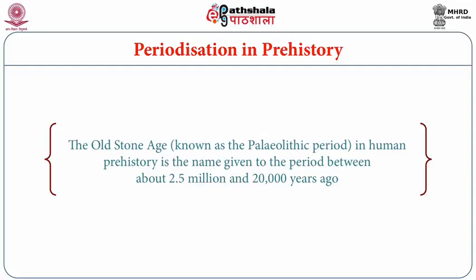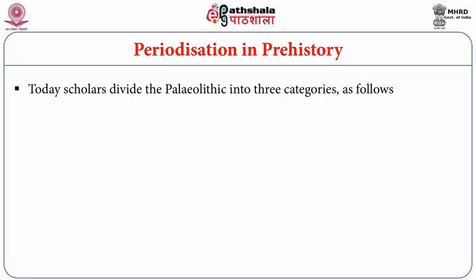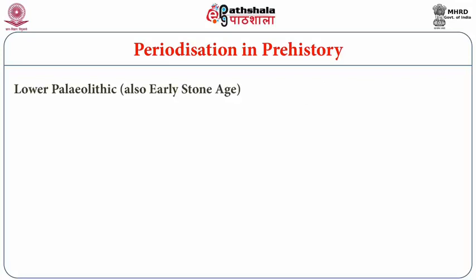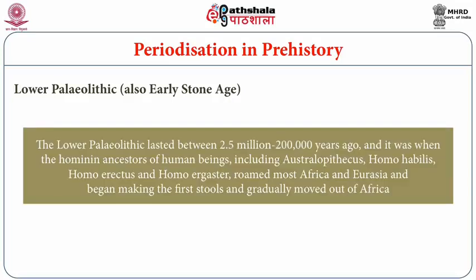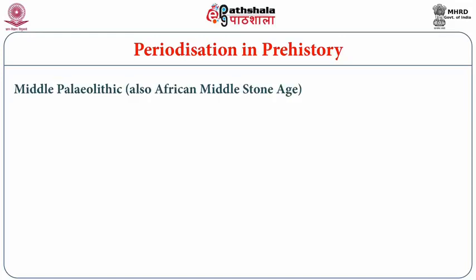We now briefly explain the concept of periodization in prehistory. The Old Stone Age, known as the Paleolithic, spans between 2.5 million years and 20,000 years ago. Scholars divide it into three categories. The Lower Paleolithic, also known as the Early Stone Age, lasted between 2.5 million years to 200,000 years ago, when hominin ancestors including Australopithecus, Homo habilis, Homo erectus, and Homo ergaster made the first tools and gradually moved out of Africa.